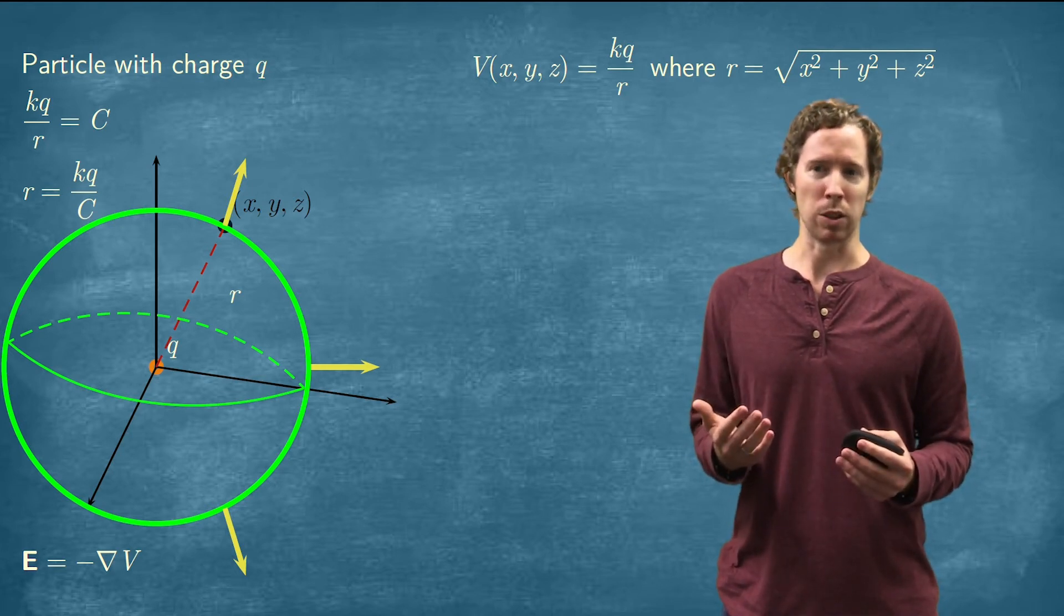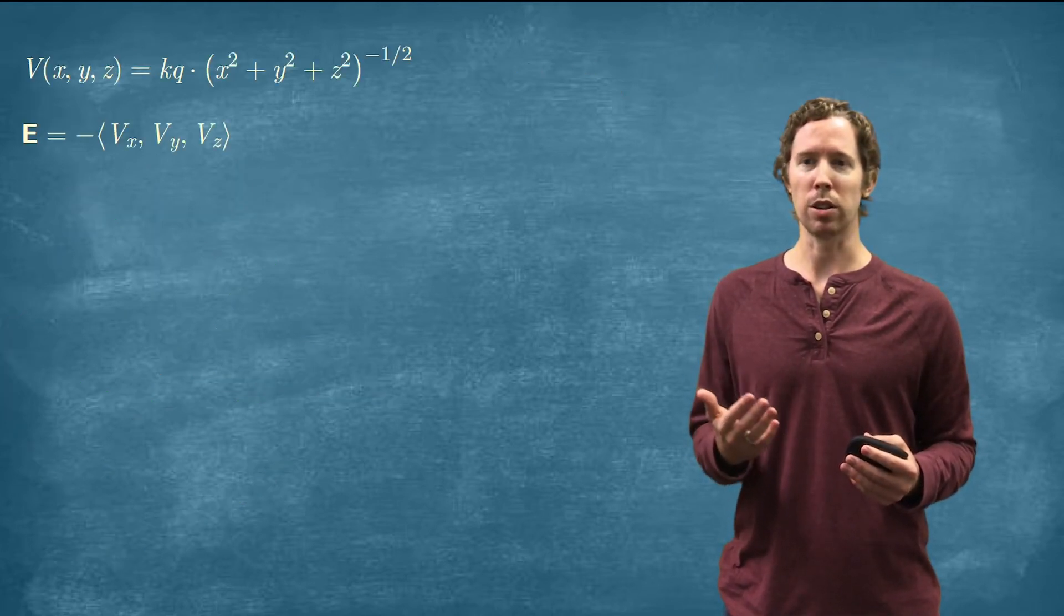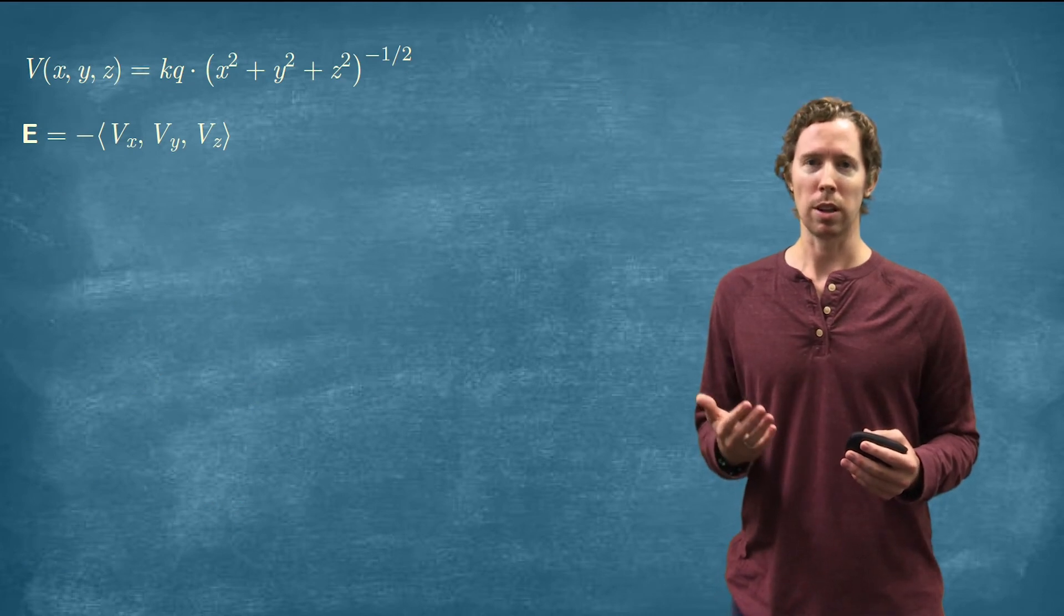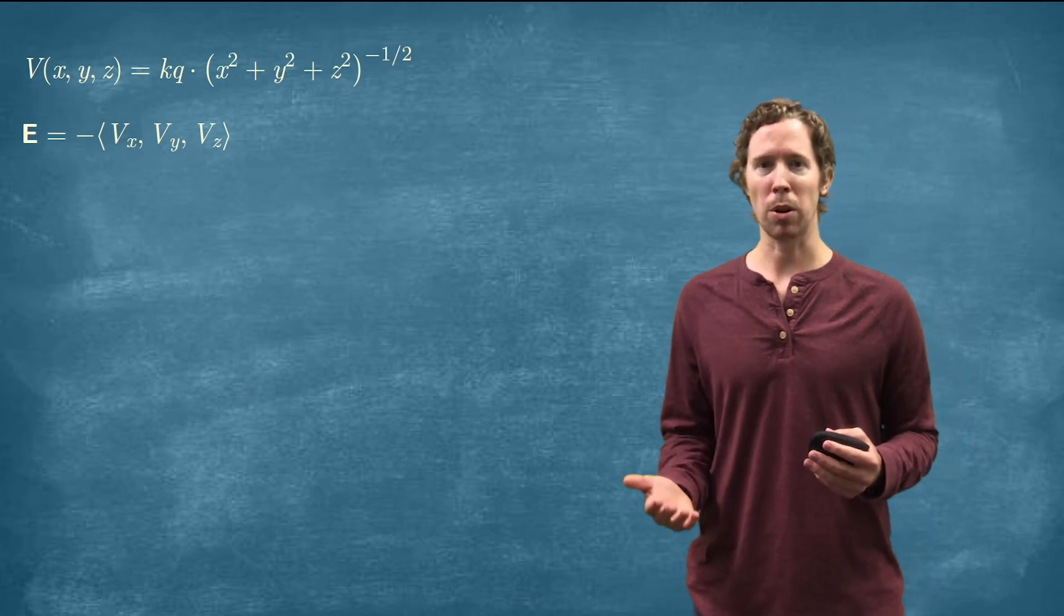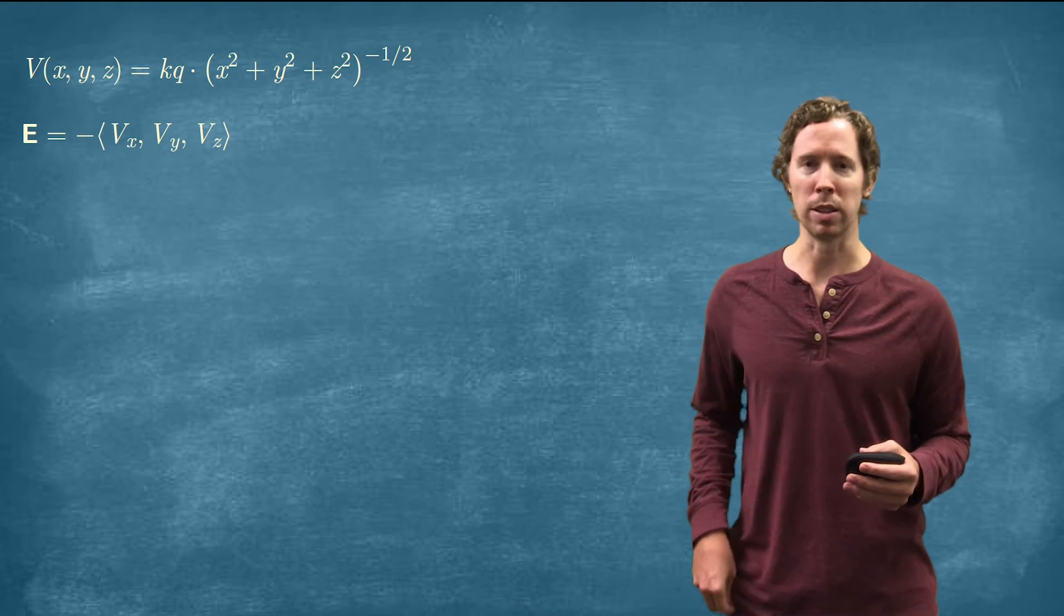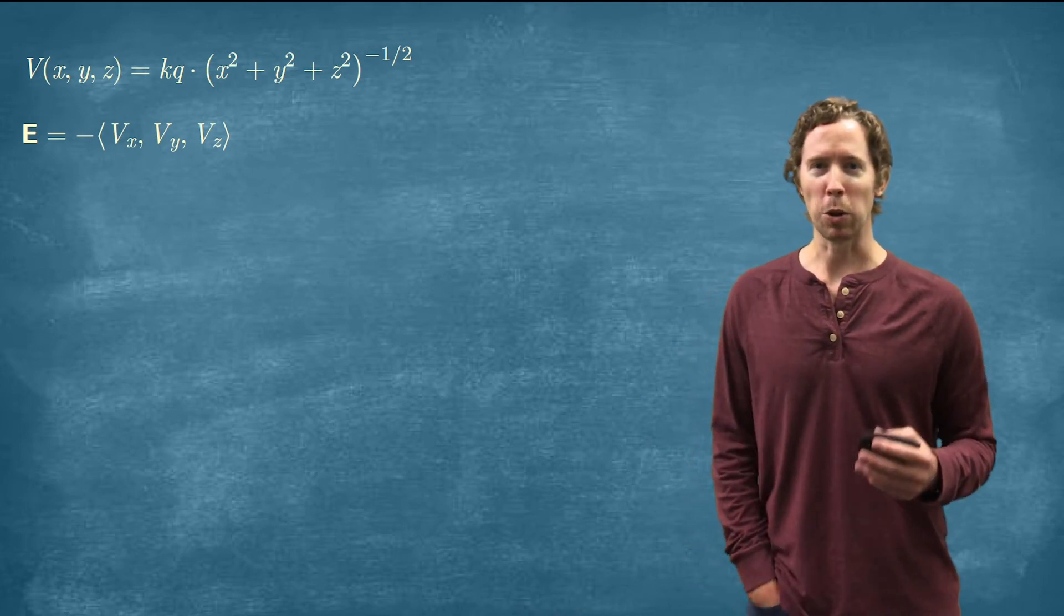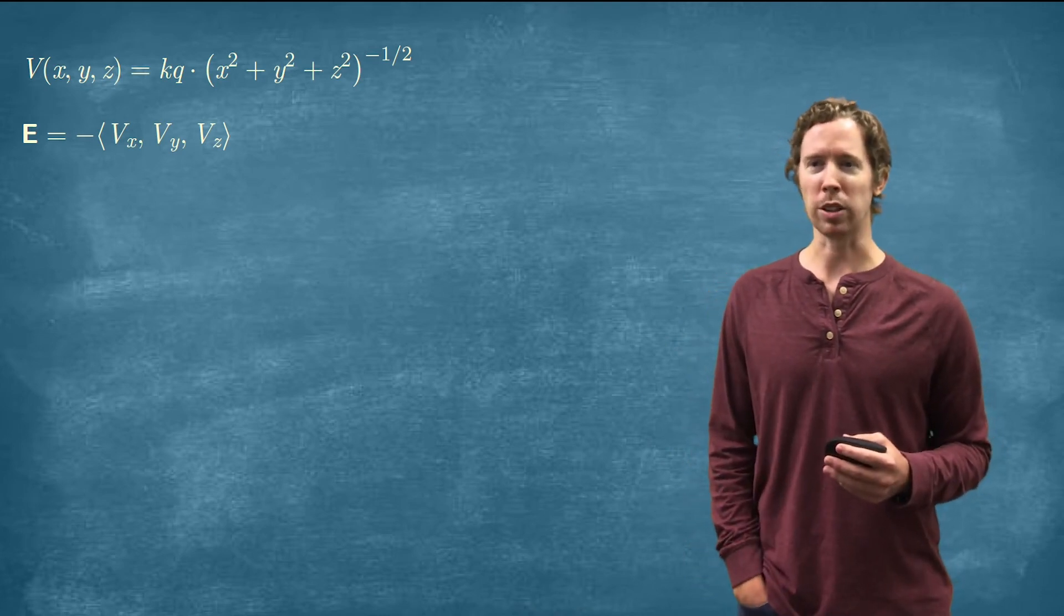We can calculate this thing as well. The gradient of V is just the partial derivative with respect to X in the X component, and then Y and Z in the Y and Z components. So let's think about how we would actually calculate this.